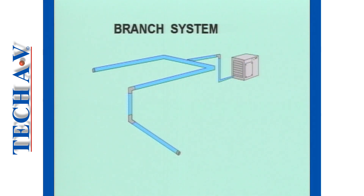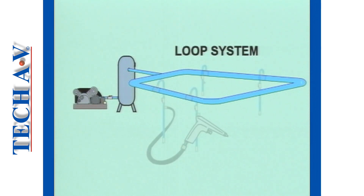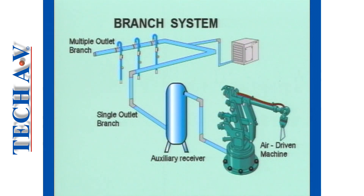There are basically two ways in which an air main can be set out: a branch system, where the main splits off in various directions and terminates at the end of a branch; or it may be set out in a loop system, where the air flow can circulate. Loop systems are best suited to applications where several working devices, such as power tools, are in use. A branch line is usually used to supply air to a single heavy consumption device.